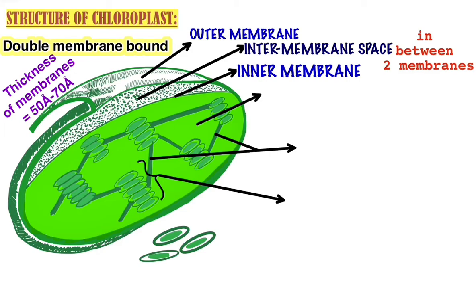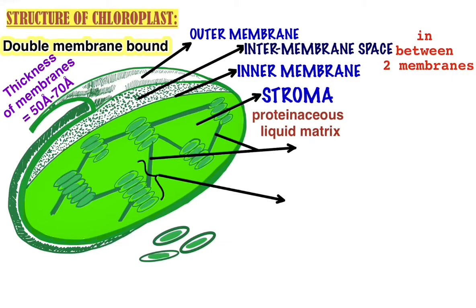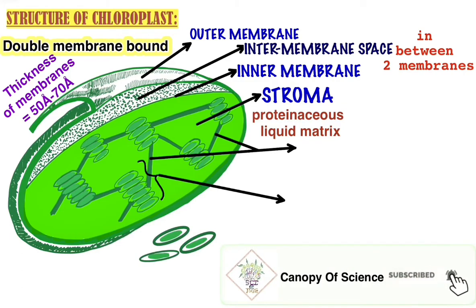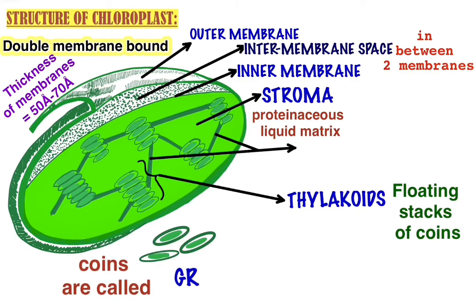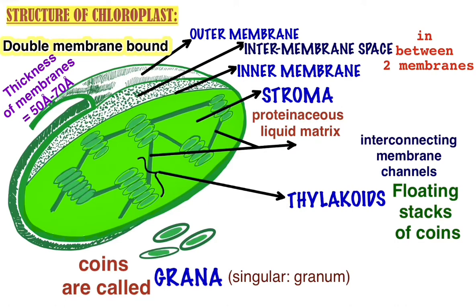As we go inside the inner membrane, we get a proteinaceous liquid matrix which is the floor of the chloroplast — the stroma. Inside the stroma we get to see stacks of coins floating. These stacks are called thylakoids. Each coin is called a grana; grana is the plural form and the singular of grana is called granum.